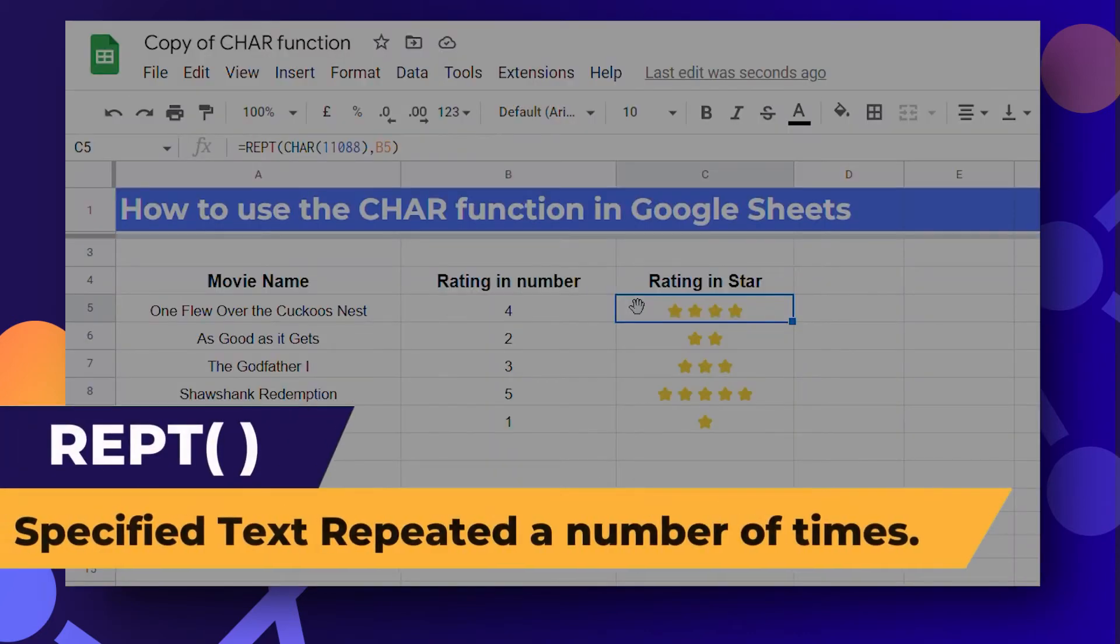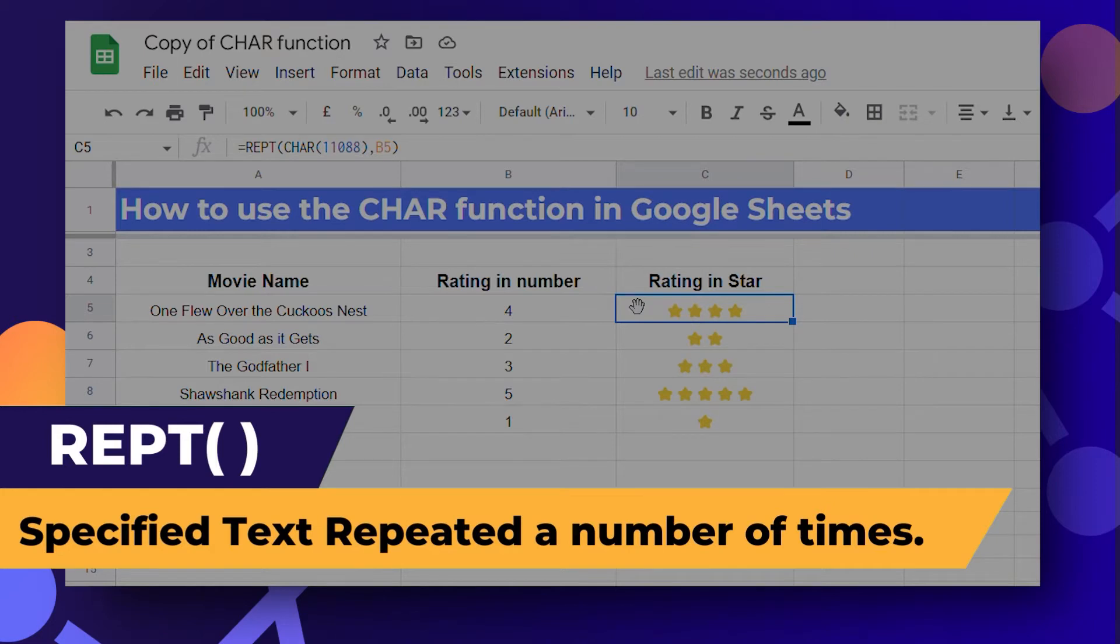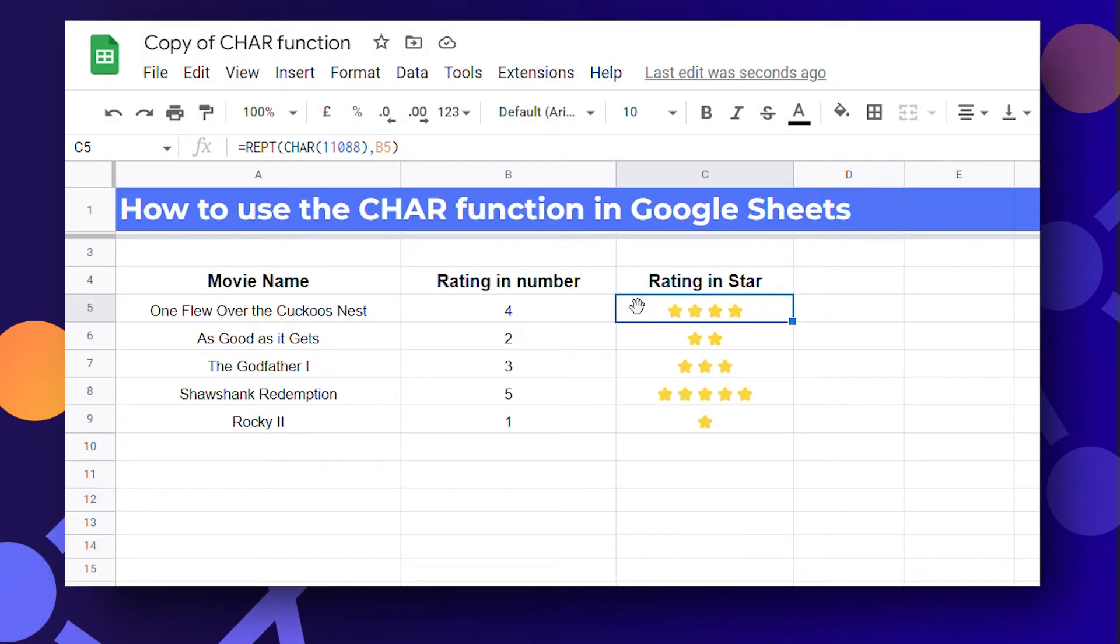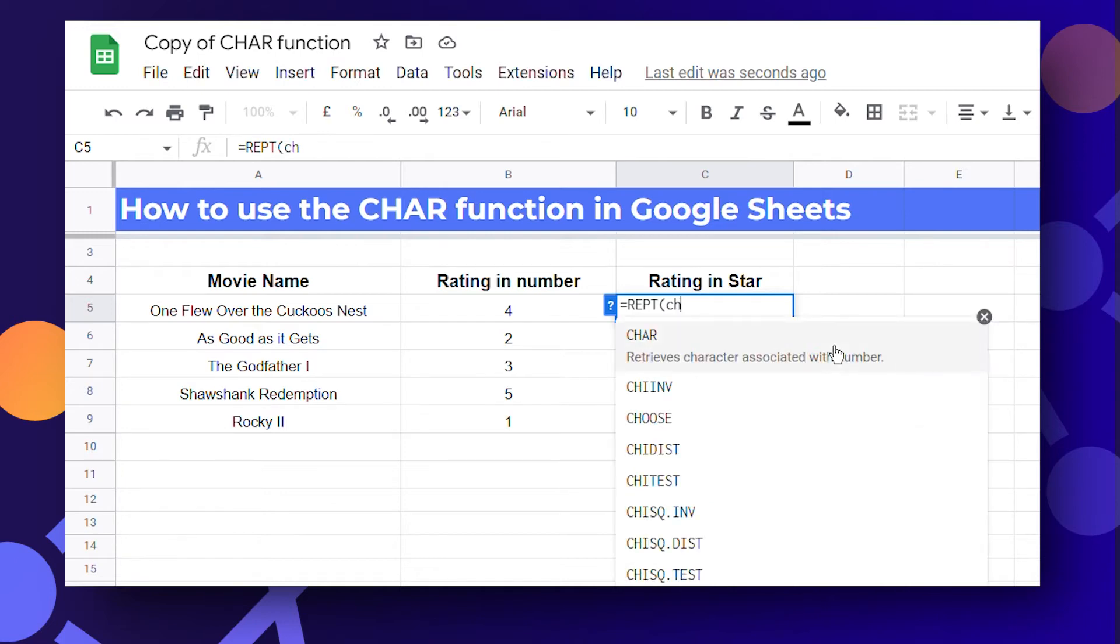In case you want to repeat the same character we can use rept function. Let's say we want to create a movie rating chart with star emojis. In one column we have the ratings and in the next column write equals to rept and the first argument is a star emoji.